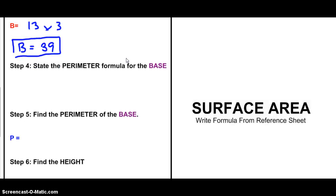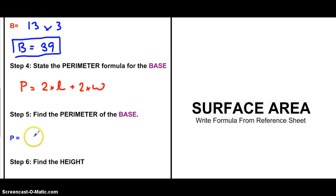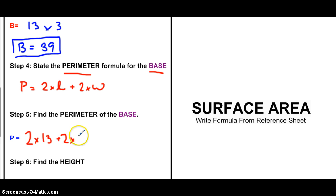Now we're going to try to find the perimeter of our base using the perimeter formula. We look it up: perimeter equals 2 times the length plus 2 times the width. Our length and width are the same — we're still using the base — so it's 2 times 13 plus 2 times 3. That's 26 plus 6, so the perimeter is equal to 32.